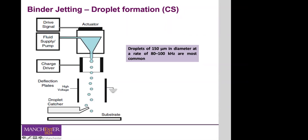The level of charge defines the geometry of each layer being printed. Particles that are not charged are caught and recycled for use in another printing operation. There are different variations of continuous stream systems, but what is important to know is the general mechanism — charging the particles and using deflection plates to direct them onto the substrate to form the geometry of each layer.